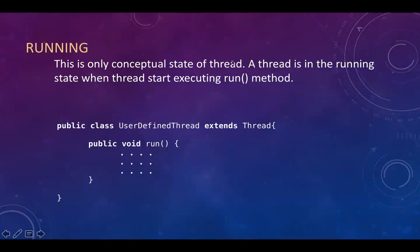Running is a conceptual state — it is not a proper state of a thread and you can't retrieve this state from any thread. The rest of the states you can get from a thread. When a thread goes to running state, the scheduler picks the thread and the run method starts executing, so the thread becomes running. A thread is in the running state when the thread starts executing its run method.